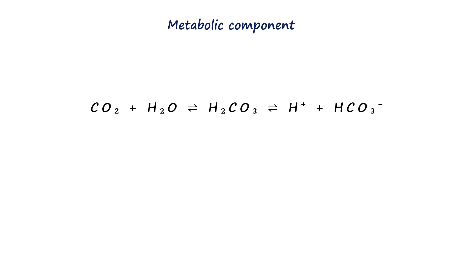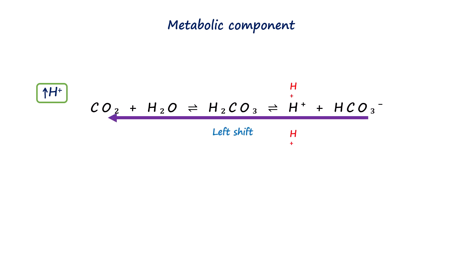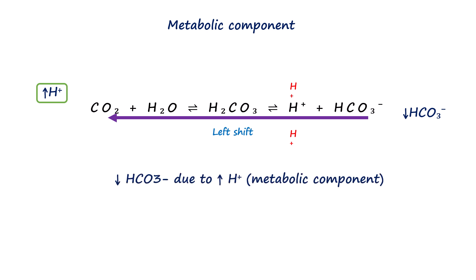Now let's see what happens when the reaction starts from the metabolic site. The metabolic site contains hydrogen and bicarb. When there is excess hydrogen, as seen in metabolic acidosis, the reaction shifts left. Hydrogen reacts with bicarb to form carbonic acid which then dissociates into water and CO2. The CO2 is then excreted via the lungs, indirectly removing hydrogen ions. In this case, bicarbonate is lowered due to non-respiratory causes, and the lowering of bicarbonate does not always have to be due to excess hydrogen — it can also occur due to excessive renal excretion of bicarbonate.